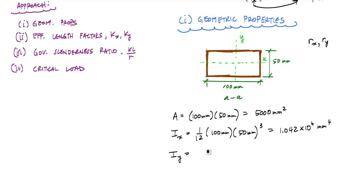And in this case, because I'm going about this axis, the vertical axis, this 50 millimeters now represents my base, and the 100 millimeters represents my height, 4.167 times 10 to the 6 millimeters to the 4th. And now I can go ahead and solve for the radius of gyration.